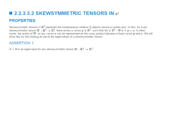We will now look at an important property of skew-symmetric matrices: they have an eigenvector associated with eigenvalue zero. We're going to look at a skew-symmetric tensor W that acts on R3 and show that it has an eigenvalue equal to zero. Because this matrix acts on R3, we know for sure that it has at least one real eigenvalue.